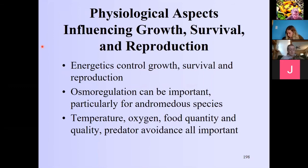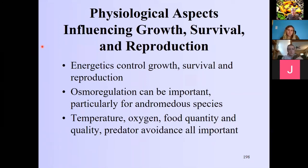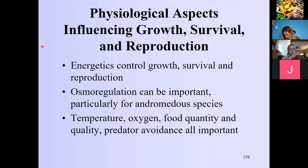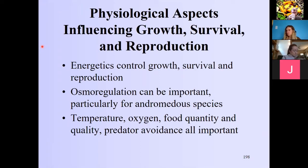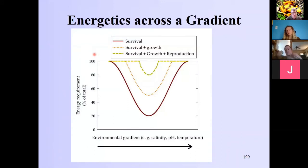Now we move to the physiological aspects influencing growth, survival, and reproduction. Any organism, as we've discussed with evolution, needs to work with energy to control growth, survival, and reproduction. Osmoregulation can also be a stressor for diadromous species. The key factors include temperature, oxygen, food quantity and quality, and predator avoidance.